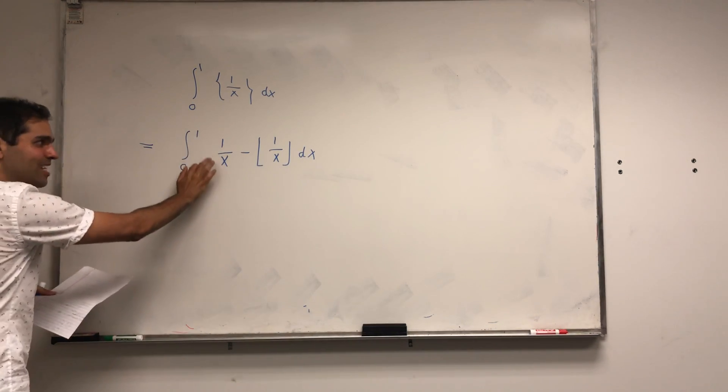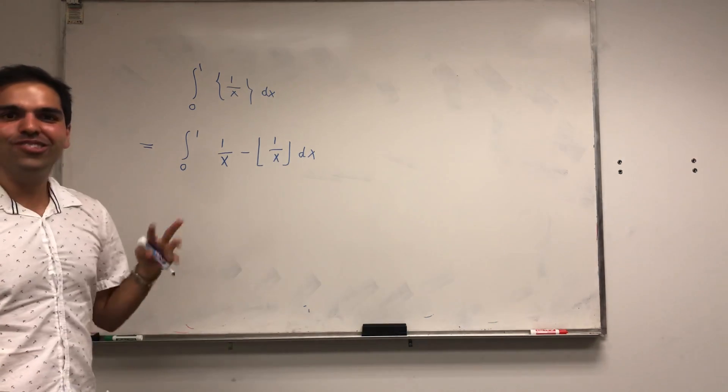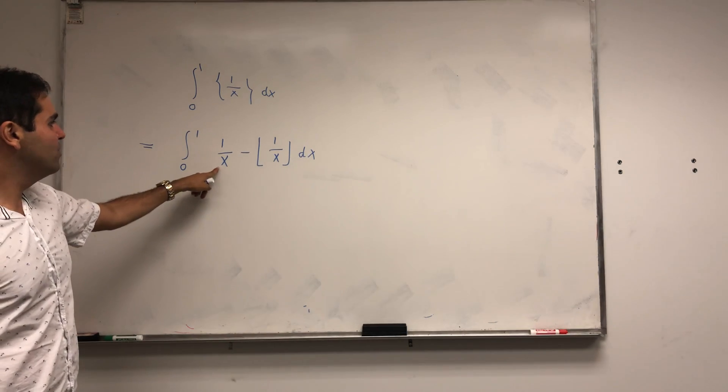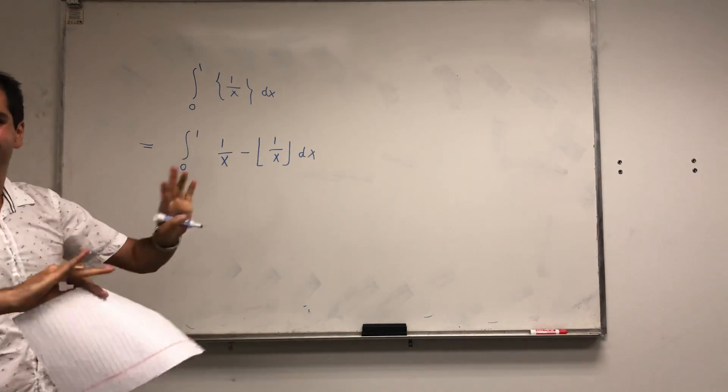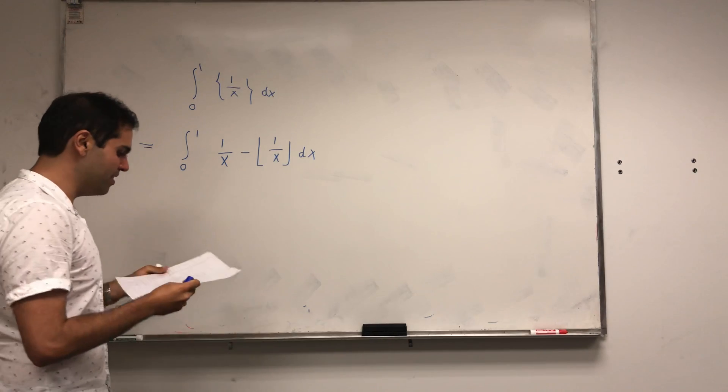And I know you really want to evaluate this 1 over x, but contain your excitement, we'll do it all the way at the end. Because otherwise, if you do that, you get infinity and turns out the answer is sort of the difference between two infinities. So let's keep it for now.